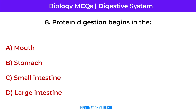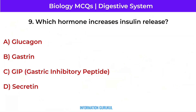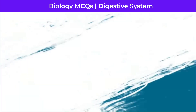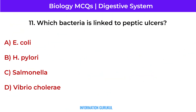Protein digestion begins in the stomach. Which hormone increases insulin release? Gastric inhibitory peptide. Which disorder is caused by acid reflux into the esophagus? Gastroesophageal reflux disease. Which bacteria is linked to peptic ulcers? H. pylori.